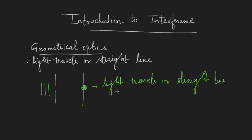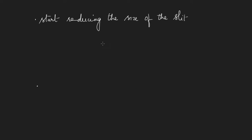Now what do I do? I start reducing the size of the slit. What was observed when we do that? If we reduce the size of the slit, let this S be my slit, and then what do I observe?